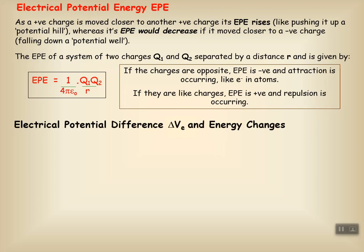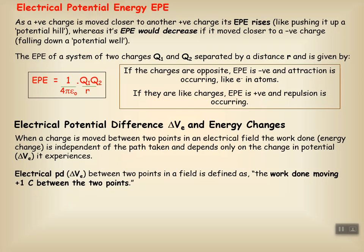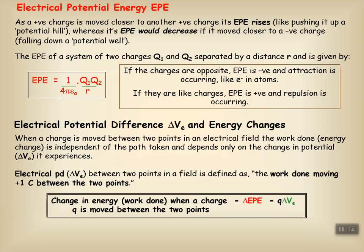Electric potential difference and energy changes: when a charge is moved between two points in the electric field, the work done or energy change is independent of the path taken and depends only on the change in potential it experiences. The electric potential difference ΔVE between two points is determined as the work done in moving a one-coulomb charge between those two points. The change in energy or work done when a charge Q is moved between two points equals Q times ΔVE. The relationship between electric potential and electric potential energy is that we multiply the electric potential by the second charge Q. I hope you have an awesome day — please feel free to ask any questions. Goodbye.